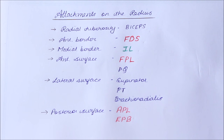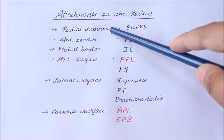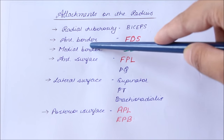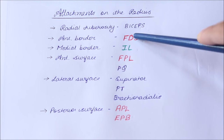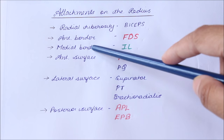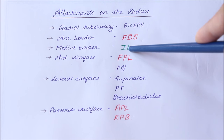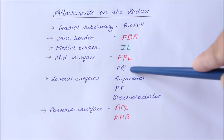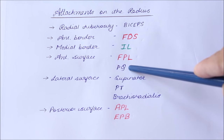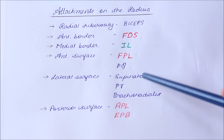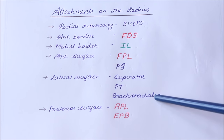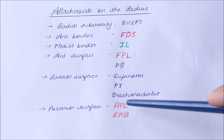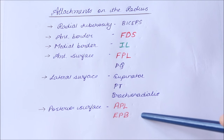To summarize the important attachments on the radius: the radial tuberosity gives insertion to the biceps brachii in its rough posterior part. The anterior border gives origin to the flexor digitorum superficialis. The medial border gives attachment to the interosseous ligament. The anterior surface gives origin to the flexor pollicis longus and insertion to the pronator quadratus. The lateral surface gives insertion to the supinator, pronator teres, and brachioradialis. The posterior surface gives origin to the abductor pollicis longus and extensor pollicis brevis.